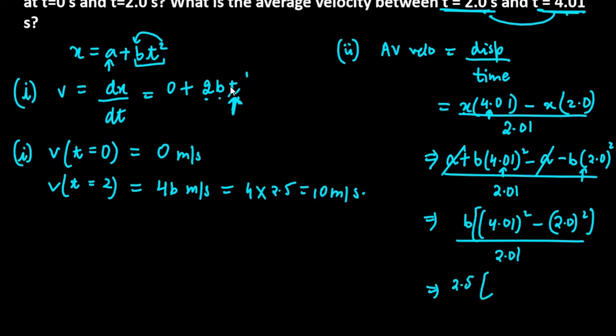B is 2.5. First, 4.01 square is 16.0801 approximately, and 2.0 square is 4.01. You have to solve, and your approximate answer will be 15.025 or 15 meter per second.